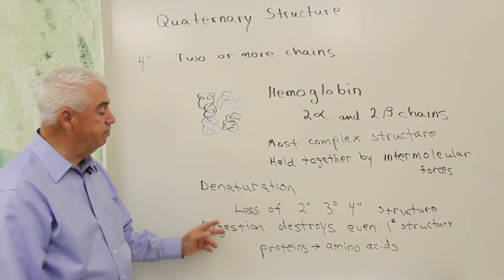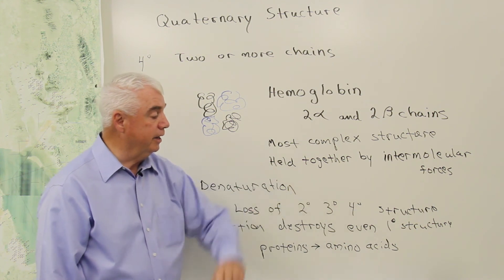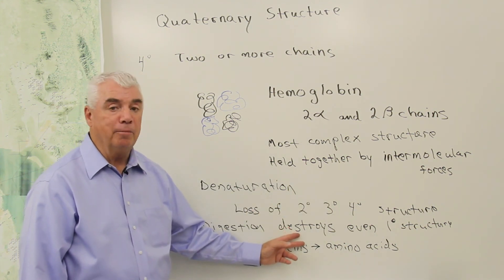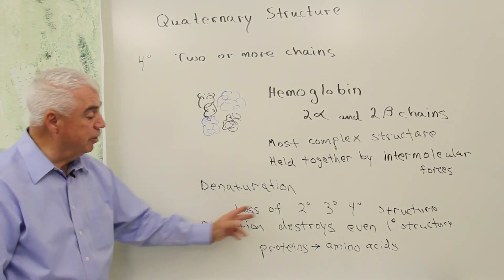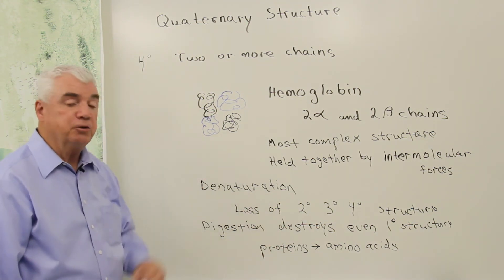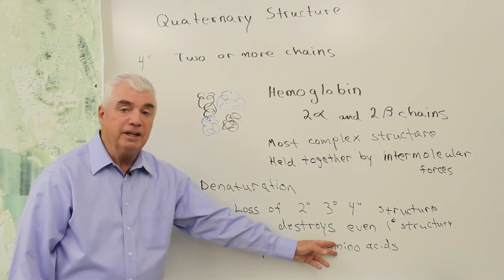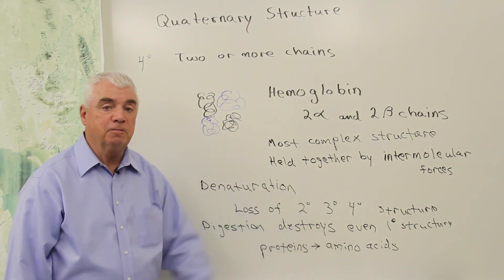Digestion can destroy not only secondary, tertiary, and quaternary structure, but even primary. And the body does this very effectively using enzymes. As proteins pass through the digestive system, they're broken down into individual amino acids.